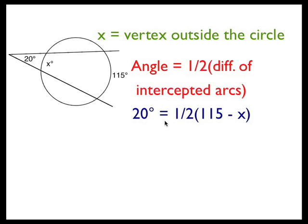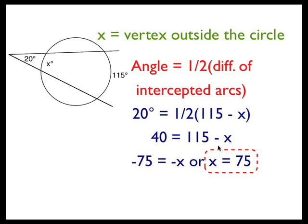The angle of 20 degrees equals one half times 115 minus X. Multiplying both sides by 2 to get rid of the fraction, I get 40 equals 115 minus X. Then subtracting 115 from both sides, I get negative 75 equals negative X, or X equals a positive 75 degrees.